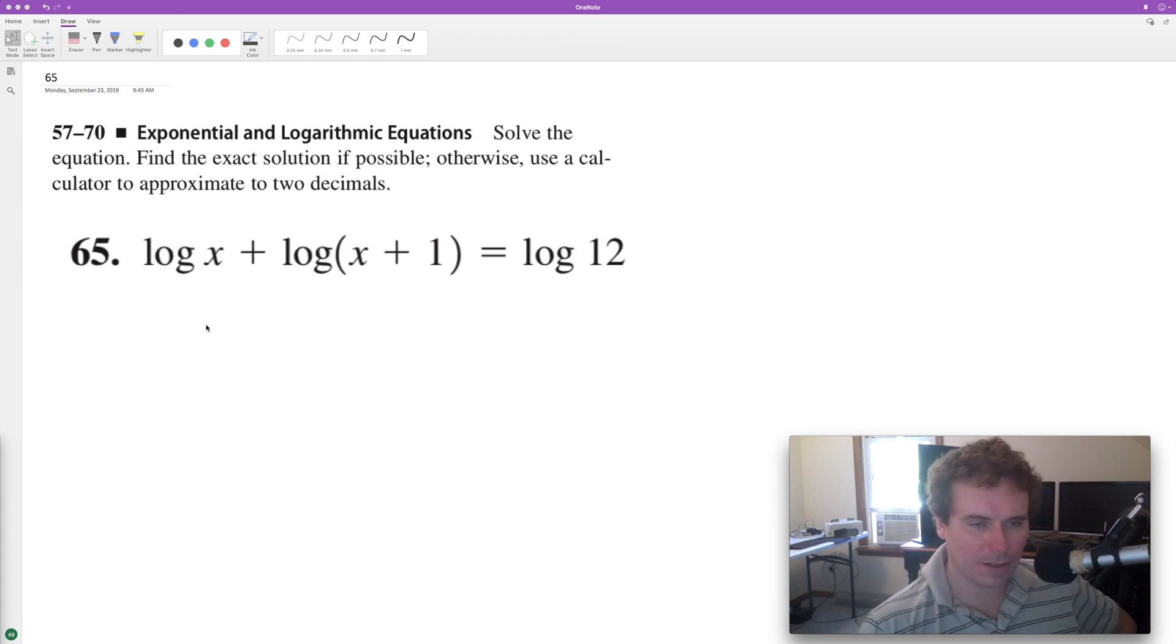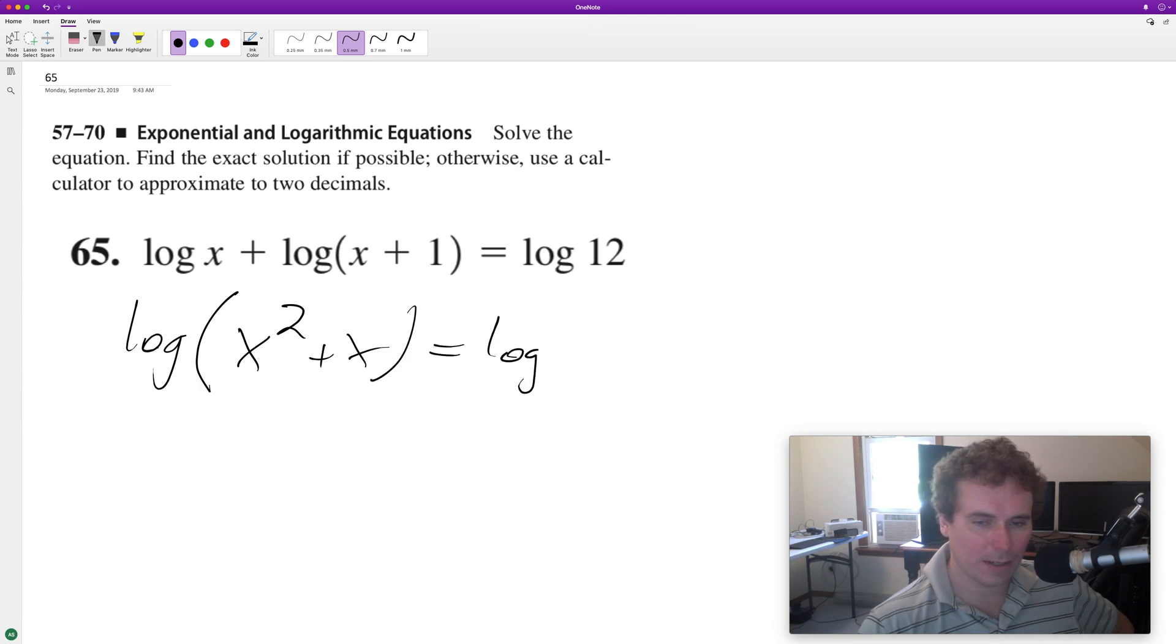For this problem, we're going to combine both logarithms on the left. When you add logarithms, it's the same as multiplying inside the log. So we get log(x² + x) equals log 12.